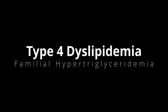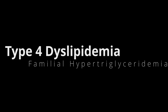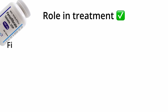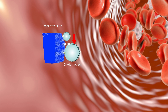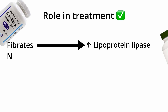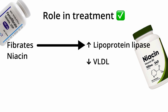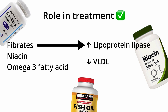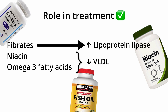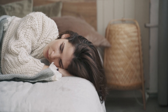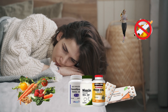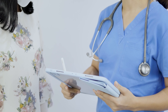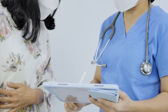In type 4 dyslipidemia (familial hypertriglyceridemia), lipid-lowering therapy with fibrates — which increase lipoprotein lipase activity and decrease VLDL triglycerides — along with niacin, which decreases VLDL production by the liver, and fish oil, which decreases VLDL production and triglyceride levels, are important parts of treatment. Adherence to lifestyle modifications, dietary changes, and medication is challenging for patients. Patient education is thus an integral part of management.